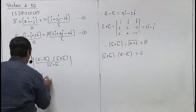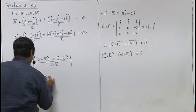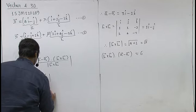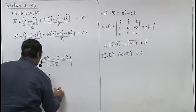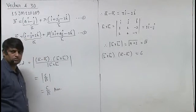In this formula, this is mod of 6 upon root 5. This is the answer. Shortest distance between two lines is 6 upon root 5.